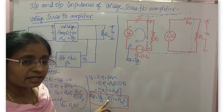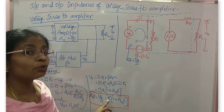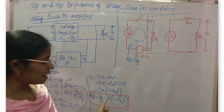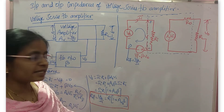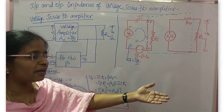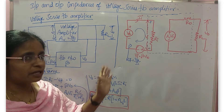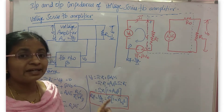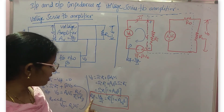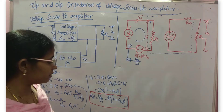Ri is the input resistance of the voltage amplifier without feedback. Now RIF becomes Ri times (1 plus Av·beta), meaning the input impedance increases by a factor (1 plus Av·beta). We know (1 plus Av·beta) is called desensitivity, so RIF equals Ri times desensitivity.